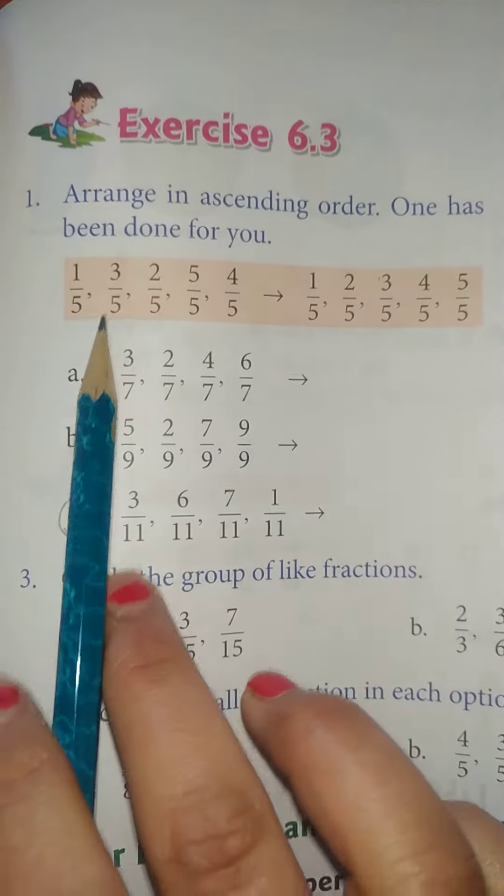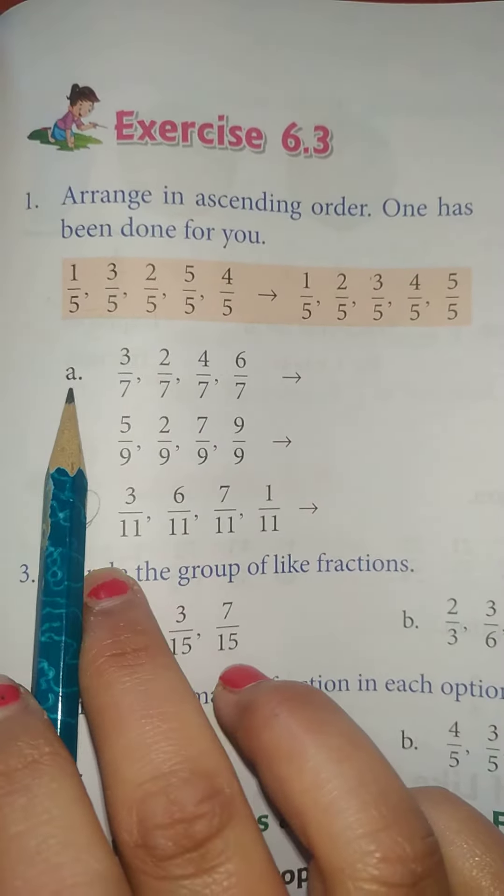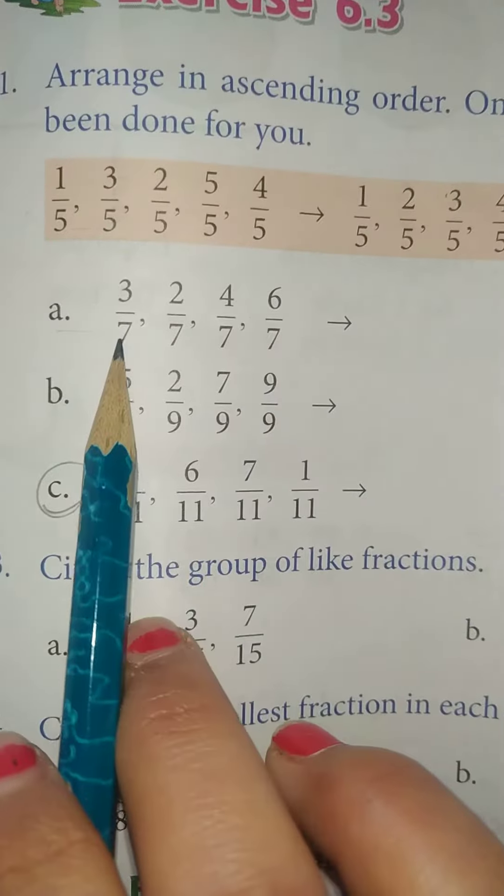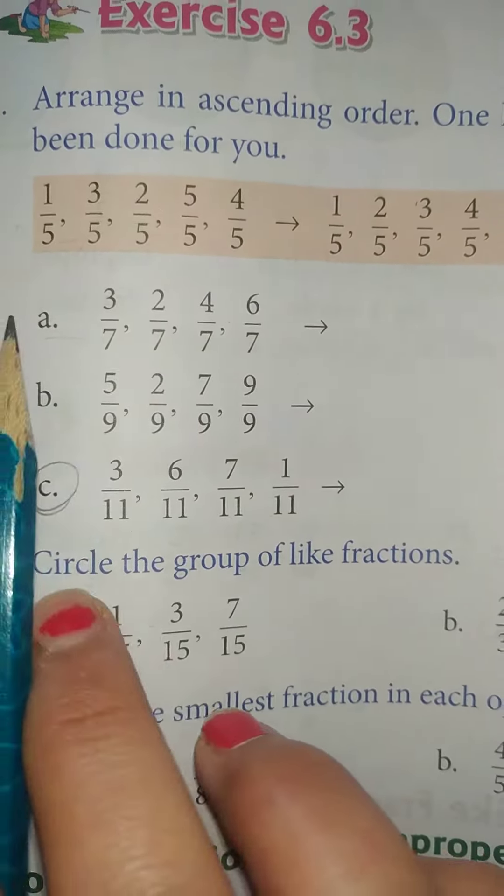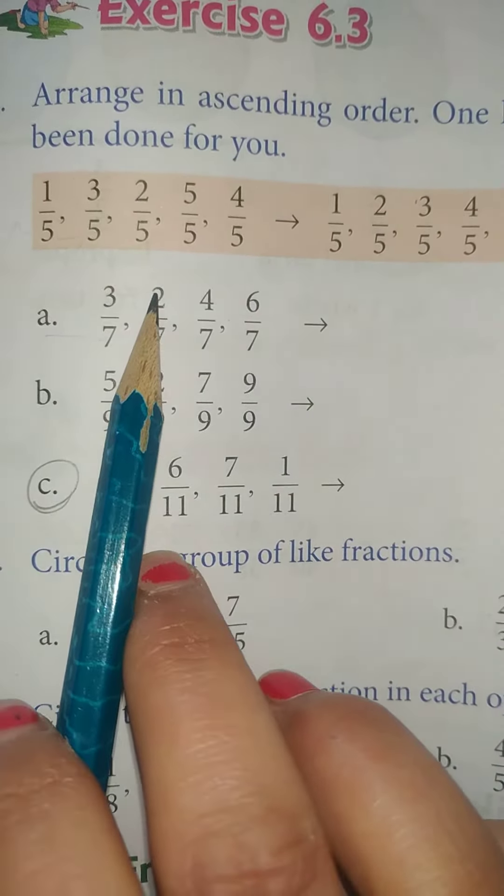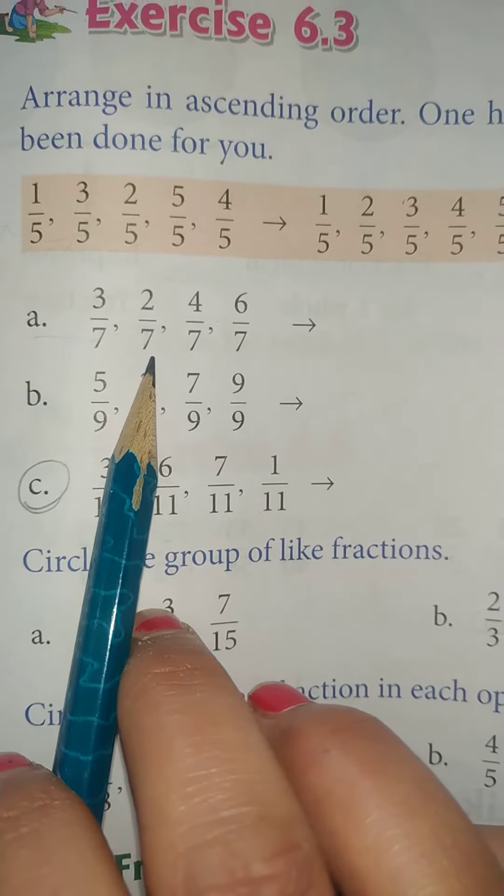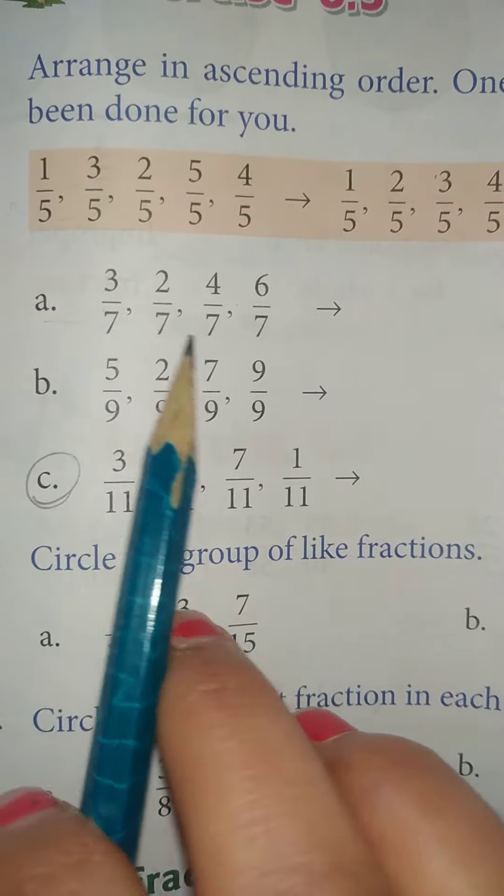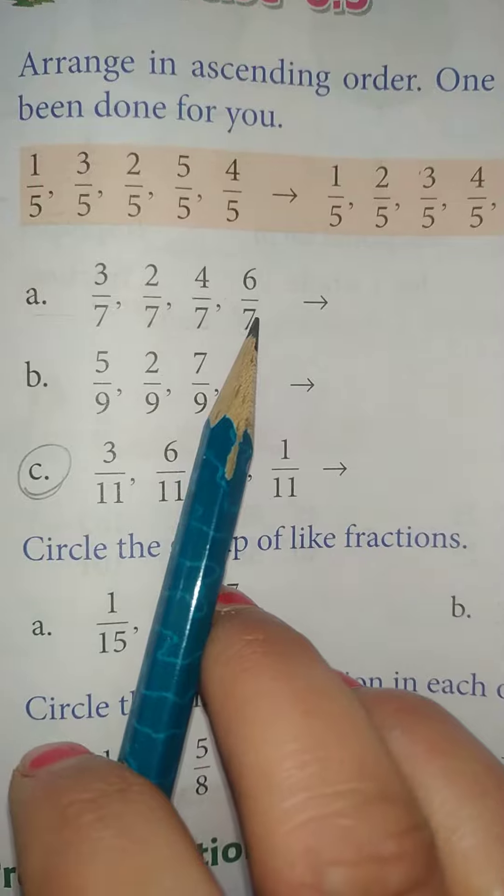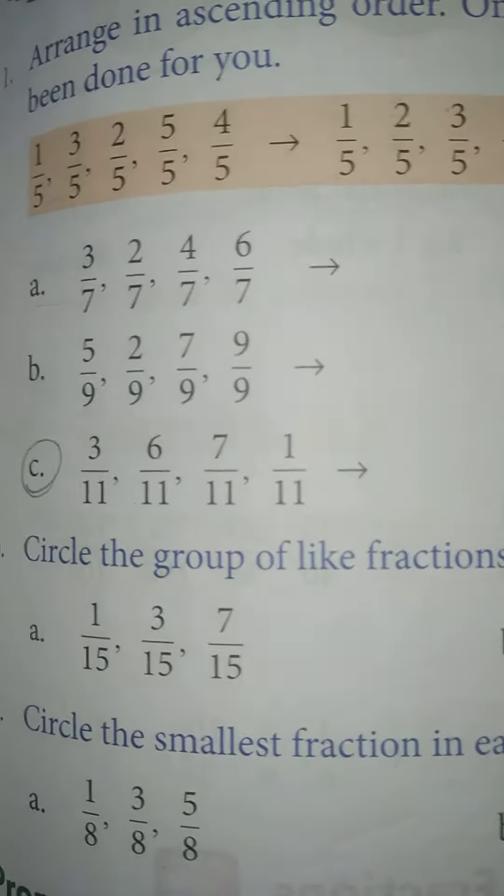Okay, so in numbers ko aapko ascending order me arrange karna hai. Yhaa pe ye sare fractions kaise hai, like fractions, because inka denominator same hai. So is mein sab se smallest number hai, 2. So 2 by 7, then 3 by 7, then 4 by 7, and then 6 by 7.